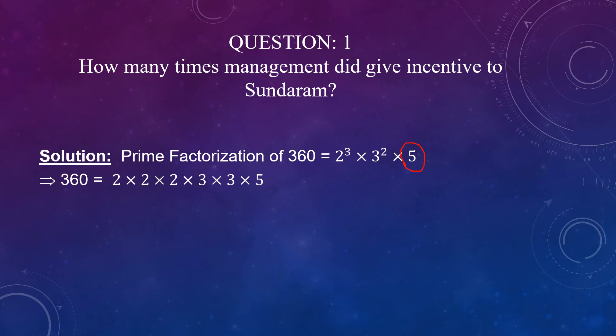We can split it like this 360 can be written as 2 into 2 into 2 multiplied by 3 into 3 multiplied by 5. So, now we can count the number of times Sundaram did get incentive. This is 1, 2nd time, then this is 3rd time, this is 4th time and this is 5th time. And this was his initial salary. So, we will not count this. So, you can see that the number of increments he got is 5 times.